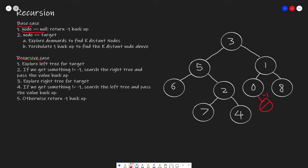The second base case is when our node equals our target. As seen in the walkthrough, we go left and eventually find target node 5. When this happens, we do two things: first, explore downwards to find all k-distance nodes (which gave us 7 and 4); second, percolate back 1 so we can find k-distance nodes that are above. We pass 1 up.